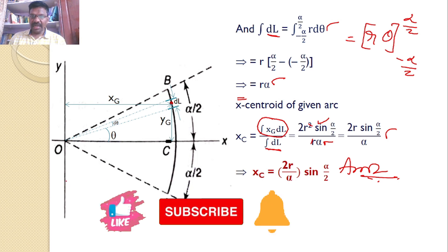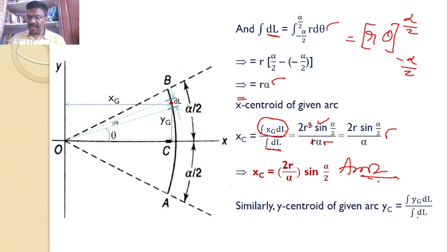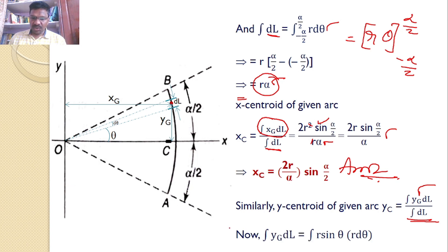Similarly, the Y coordinate YC of the circular arc AB is given by YC = (∫ YG dL) / (∫ dL). We already calculated ∫ dL = R·α. Now we need ∫ YG dL, where YG = R·sin θ, so ∫ YG dL = ∫ R·sin θ · R·dθ, with θ limits from −α/2 to +α/2.